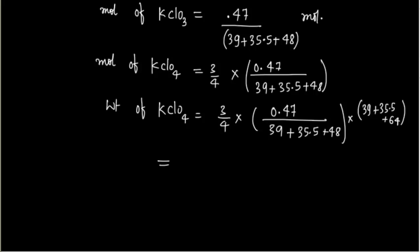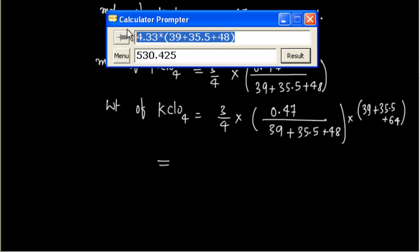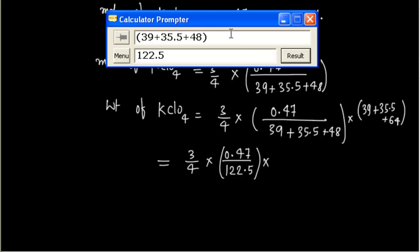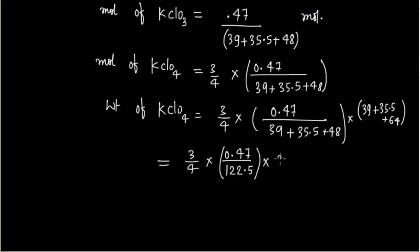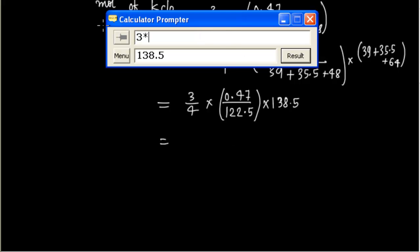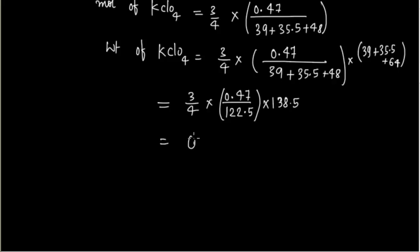The molecular mass of KClO₄ = 39 + 35.5 + 64 = 138.5. So weight of KClO₄ = (3/4) × (0.47 ÷ 122.5) × 138.5. Computing: 3 × 0.47 × 138.5 ÷ (4 × 122.5) = 0.398 g.